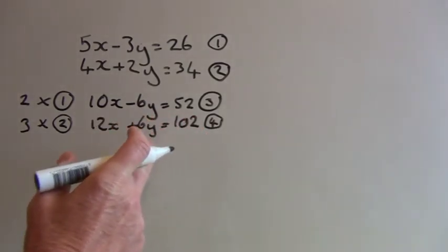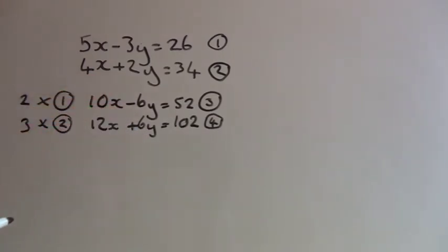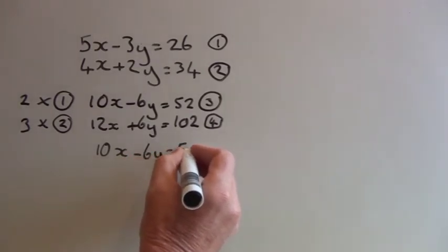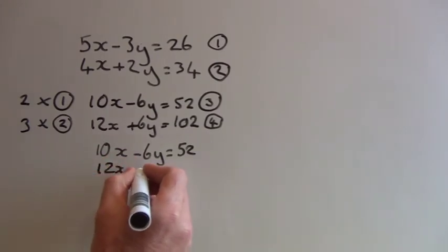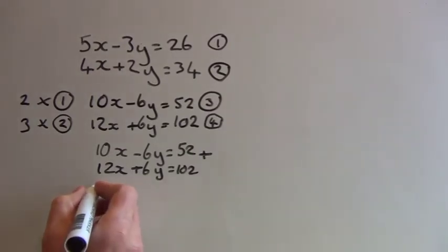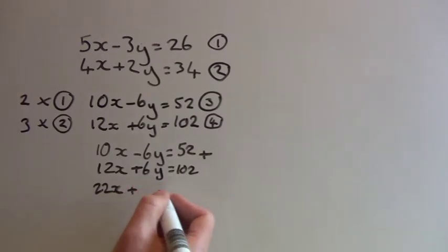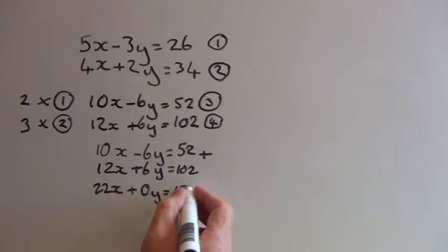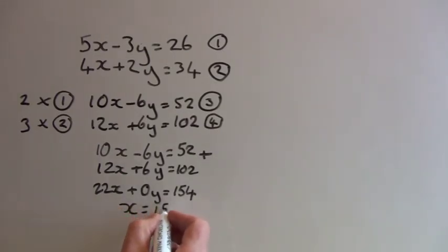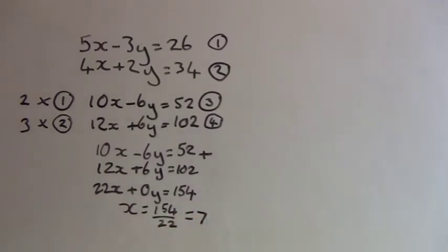Now if these equations are added — because we've got a negative 6y and a positive 6y — we get 10x minus 6y equals 52, plus 12x plus 6y equals 102, giving us 22x plus 0y equals 154. Solving for x, we get x equals 154 divided by 22, so x equals 7. I'll write x equals 7 in the top right hand corner.